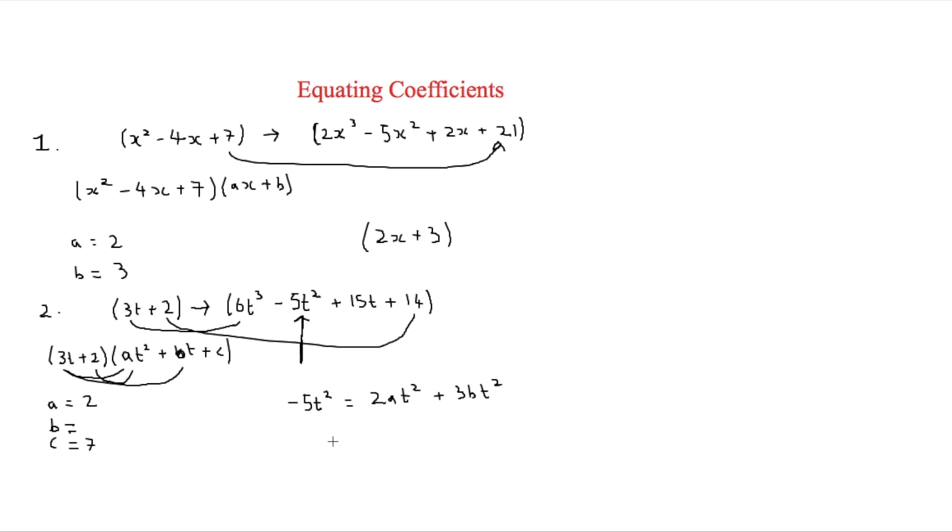Now one thing we can notice in all of these terms is that there's a t squared, a t squared, and a t squared. So what we can simply do is just take away all the t squareds because it's still the same. So therefore we've got minus 5 is equal to 2a. And as we've already worked out a, we can find that's 4 because that's 2 times 2. So minus 5 is equal to 4 plus 3b.